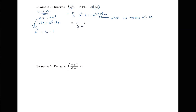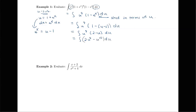So we can have u to the 9th times 1 minus (u minus 1) du. Simplifying: 1 minus u plus 1 gives us 2 minus u. So the integral becomes u to the 9th times 2 minus u du. Now we can expand this using algebra, giving us the integral of 2u to the 9th minus u to the 10th du.